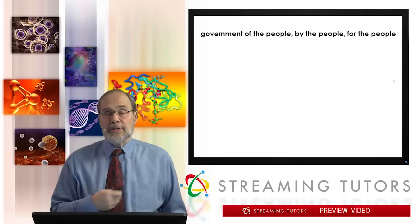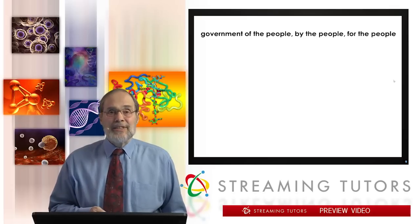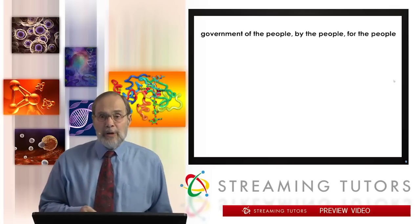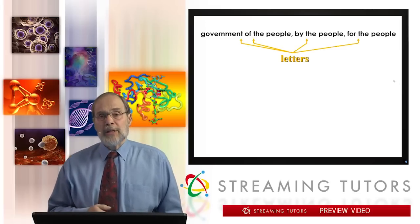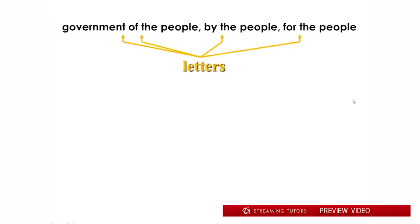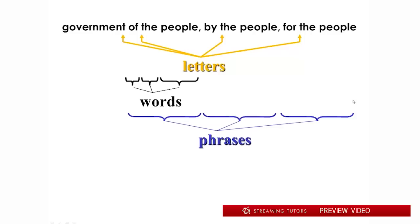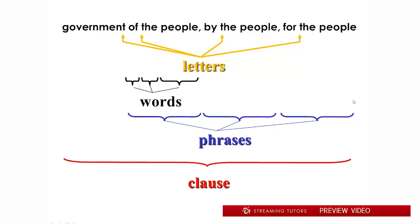Let me remind you of the analogy. This is the phrase from Lincoln's famous Gettysburg Address: 'government of the people, by the people, and for the people.' Notice that each word is made up of letters — letters make up words, words are combined to make up phrases like 'of the people,' and phrases are combined to make clauses, like 'government of the people, by the people, and for the people.' So this is a written language analogy of hierarchically nested combinatoriality.